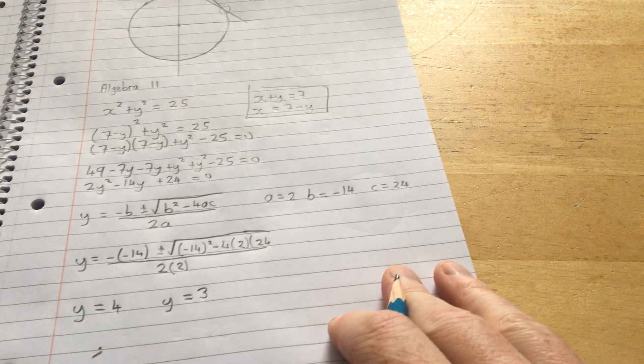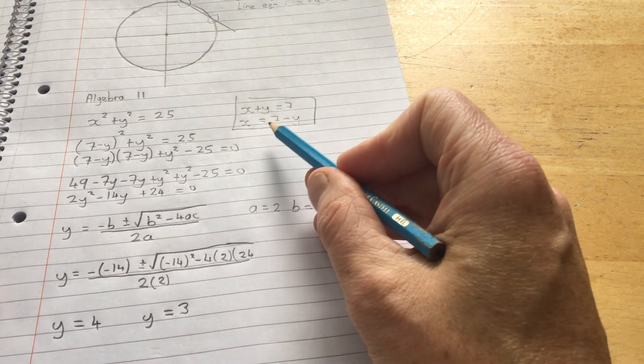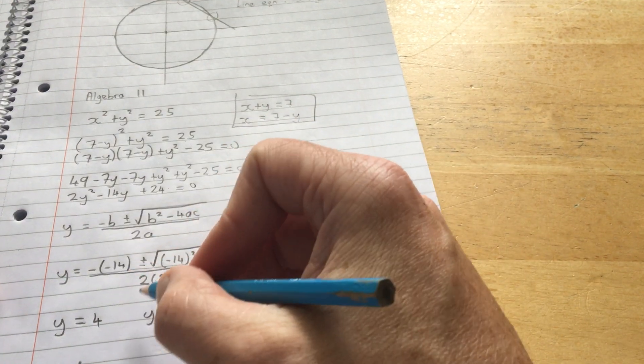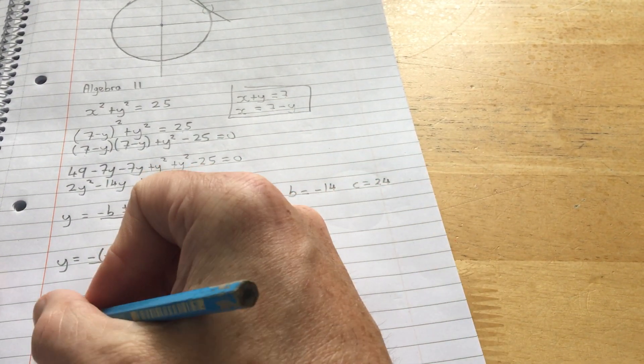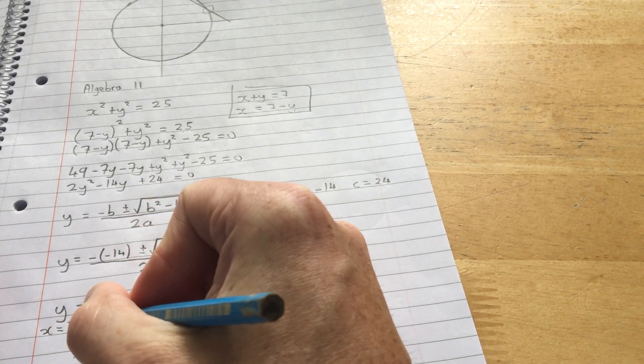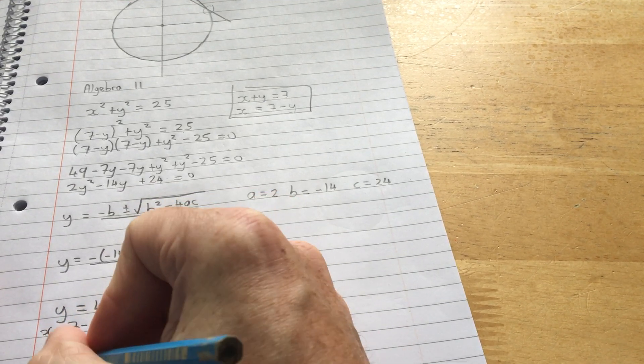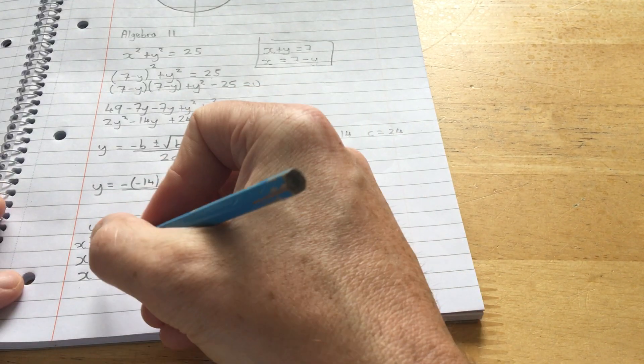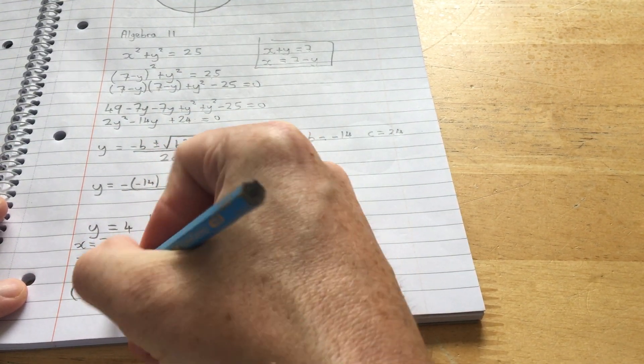However, if I have two answers for y, I will have two answers for x. Remember this equation up here, x equals 7 take away y. Well, I'm going to use that. x equals 7 take away y. So when y is 4, x equals 7 take away 4. x equals 3. So the coordinates of the first point of intersection are 3, 4.